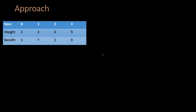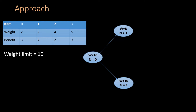Now let's look at the approach to solve this problem, using the same example but with a modified weight limit of 10. We start from item 0 — call this state w=10, n=0, where n is the item number and w is the weight limit. We have two choices: include item 0 or exclude it. Including item 0 leads to state w=8, n=1; excluding leads to state w=10, n=1. The benefit for the include path is 3 plus whatever that state returns; the exclude path gives 0 plus whatever the next state returns.